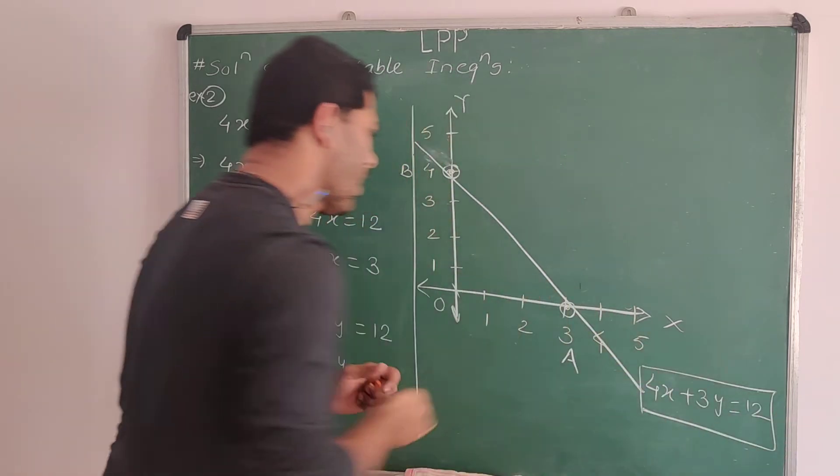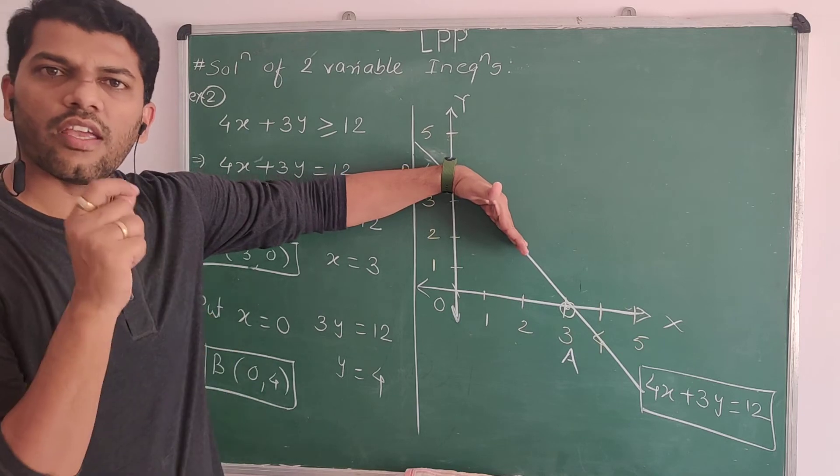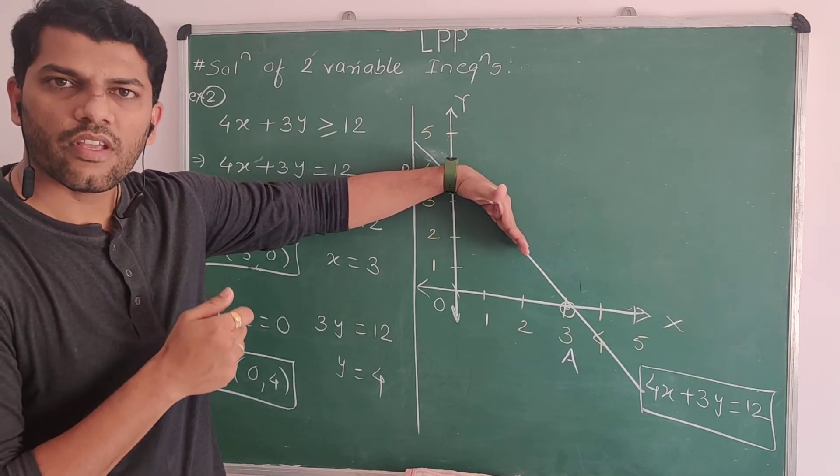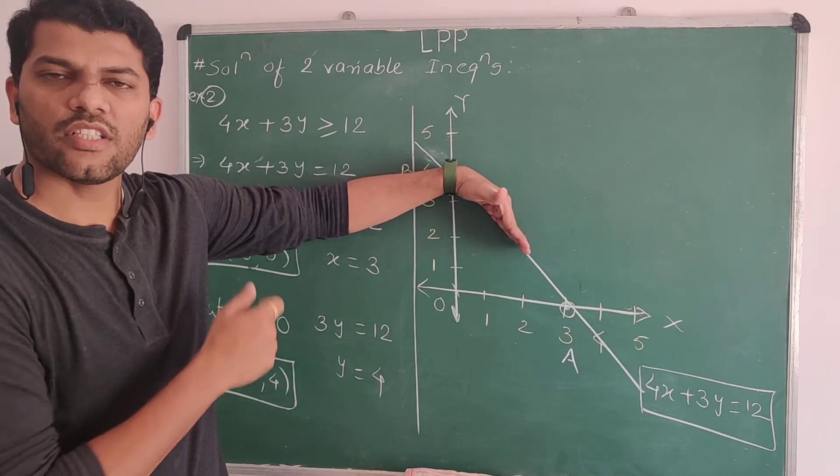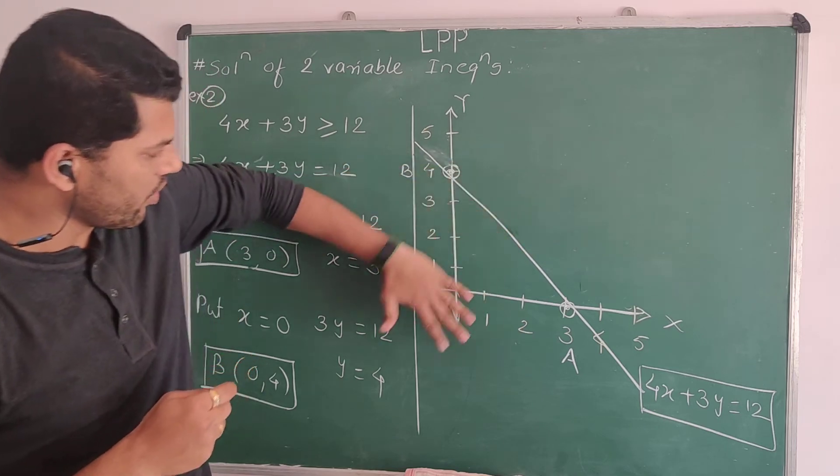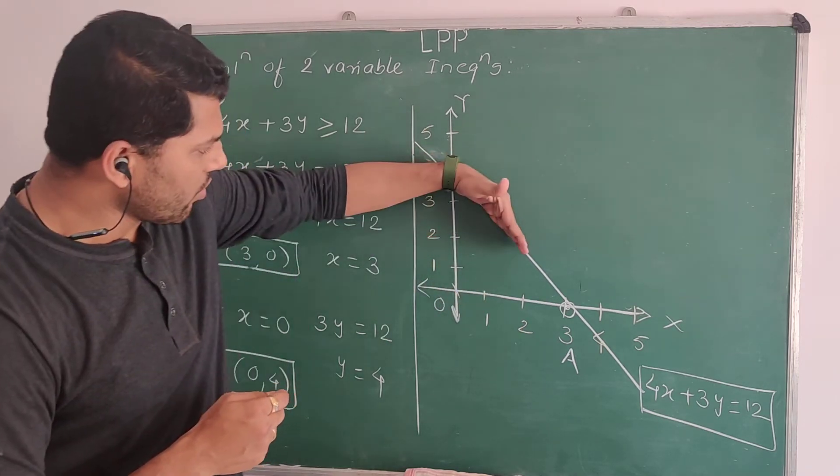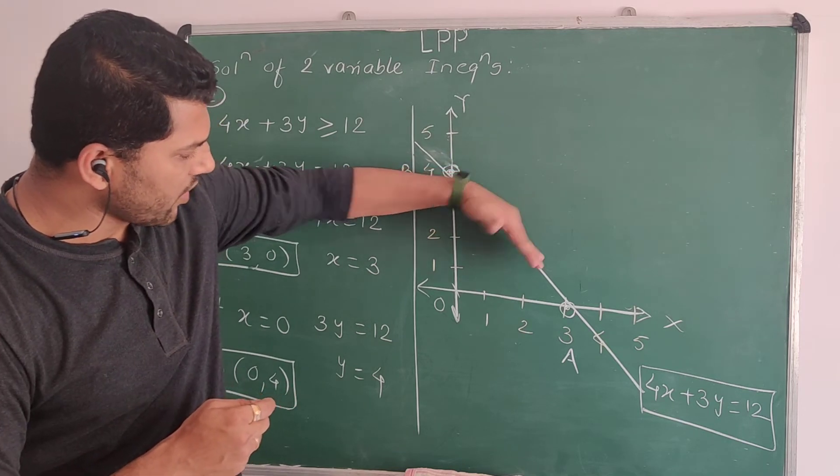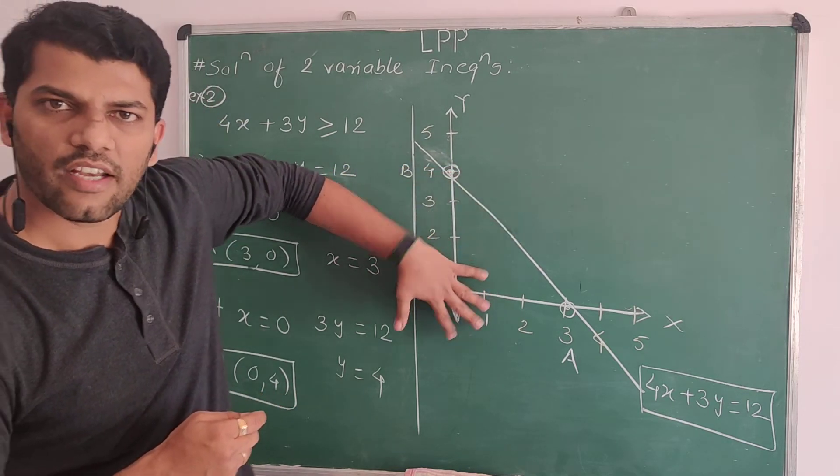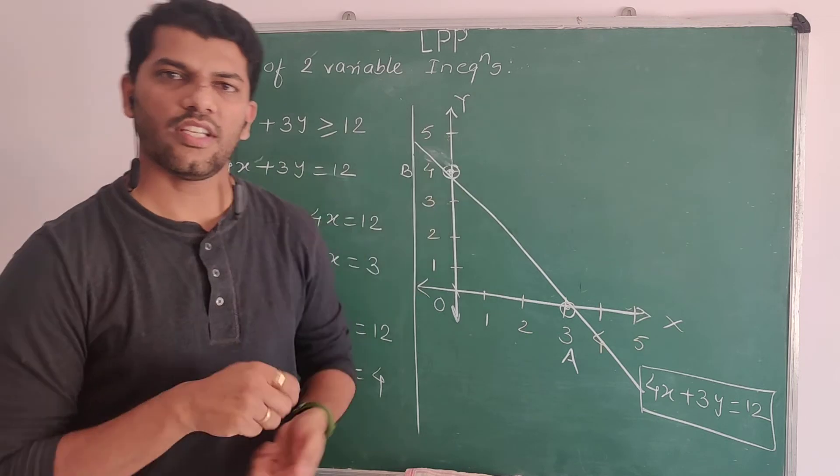As we discussed earlier, if you draw a line in a plane, it divides that plane or coordinate system into two parts: origin side and non-origin side. It divides the plane into two parts. It's very important - origin side and non-origin side.